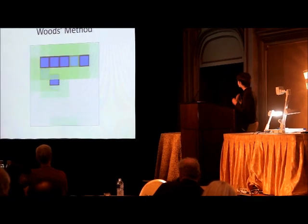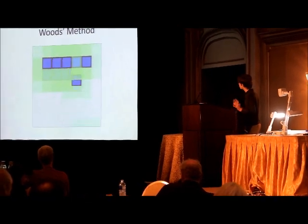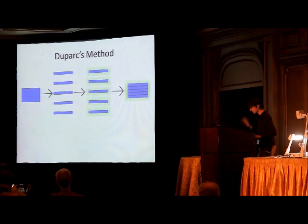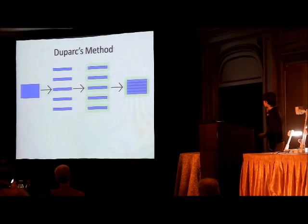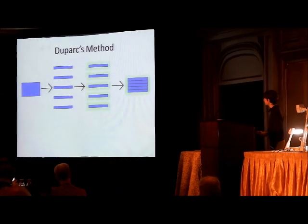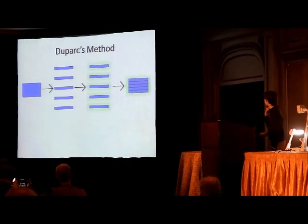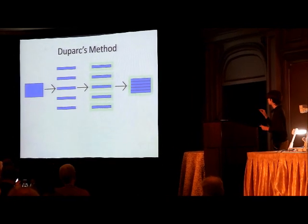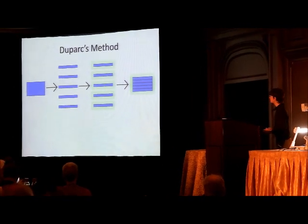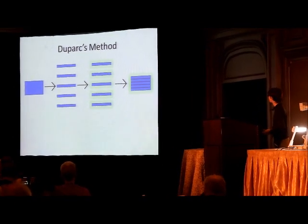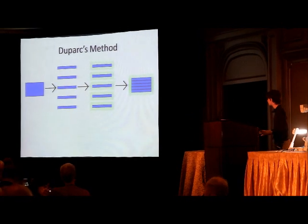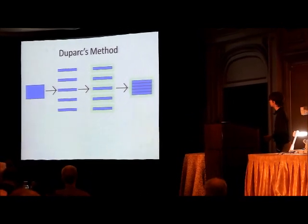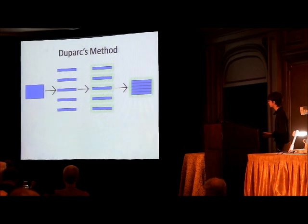Specifically, it's bad for big patterns. There is a second method, which I call Dupart's method. It goes like this: take a pattern and split it up into rows. Then find predecessors for those rows using any method you like. Then merge the rows together, and you should have a list of all the possible predecessors.